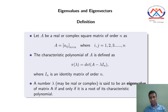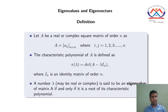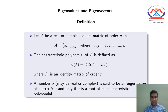We can also see that if A is a square matrix of order n, then its characteristic polynomial is also a polynomial of order n. Since the order of that polynomial is n, by the fundamental theorem of algebra we must have n roots. That means if we have a square matrix of order n, we have n eigenvalues.